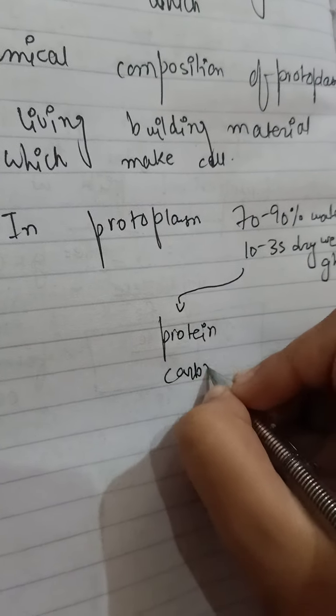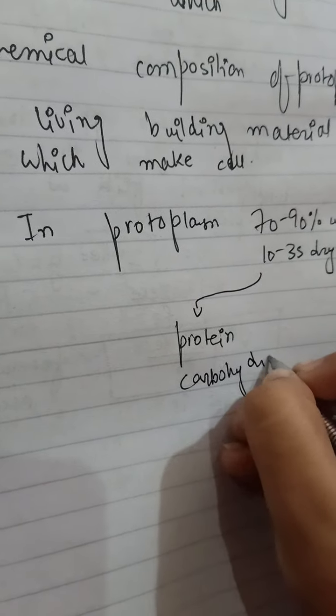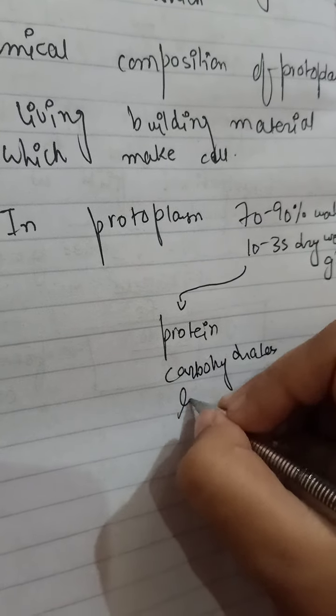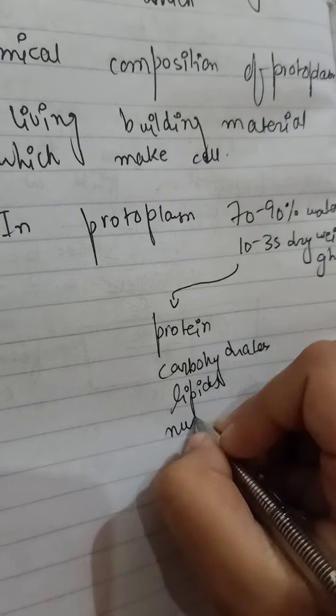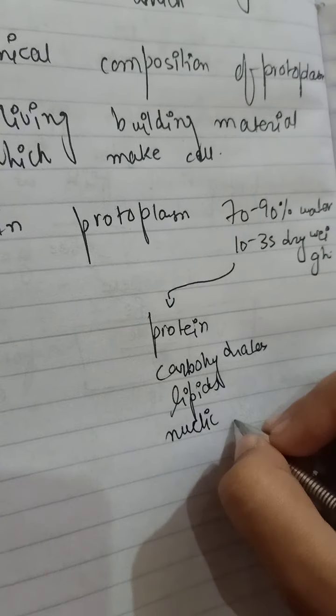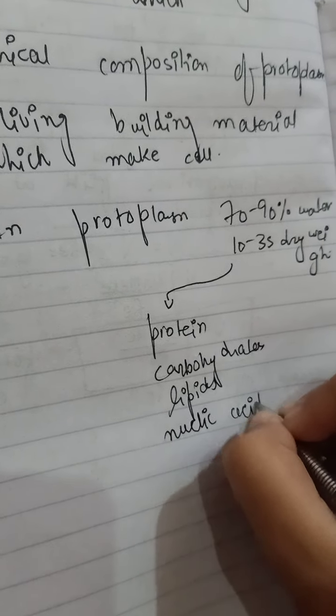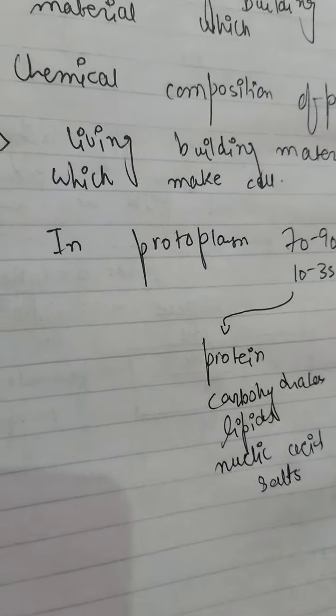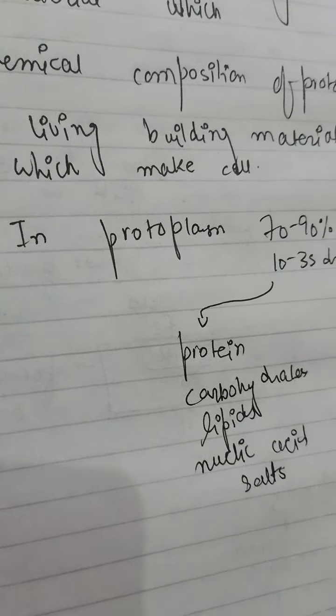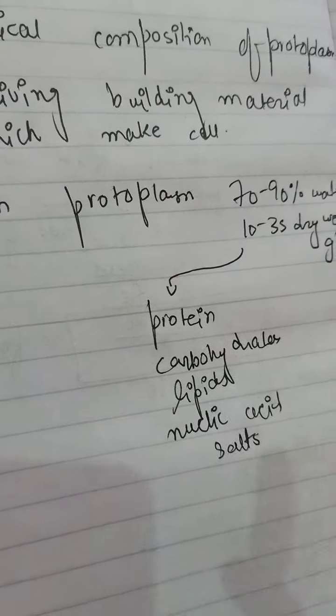carbohydrates, lipids, nucleic acid, salts, and many other things. These are the dry weight components in the cytoplasm.